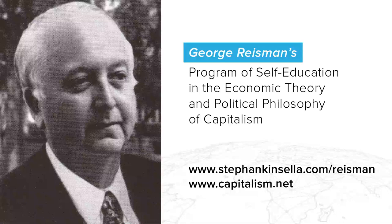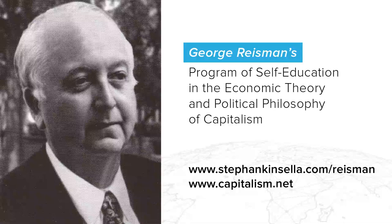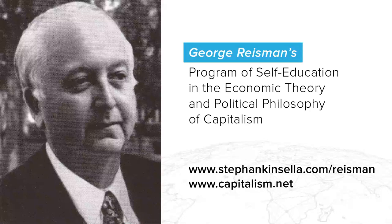A brief consideration of these cases will both illustrate the principle of the tendency of the rate of profit toward uniformity, and provide a demonstration of the value to be gained by extending the free market. Let us begin with the case of government farm subsidies. Let us imagine that the government stopped buying up farm products to be stored or given away, and at the same time reduced taxes to the extent of the reduction in its expenditures. The effect would be a drop in the demand for farm products, but since the taxpayers would now have the money previously used to pay the subsidies, there would be a rise in the demand for a host of other products.